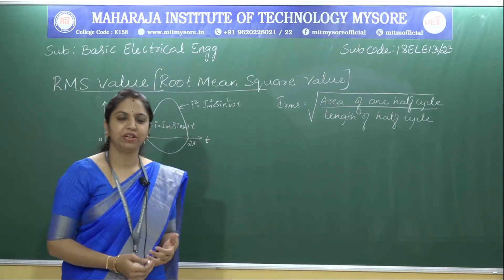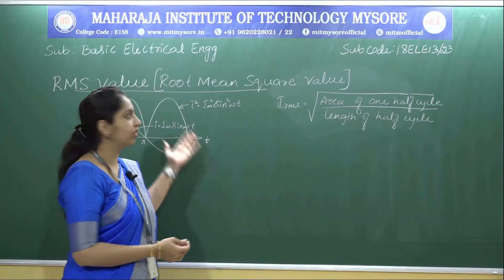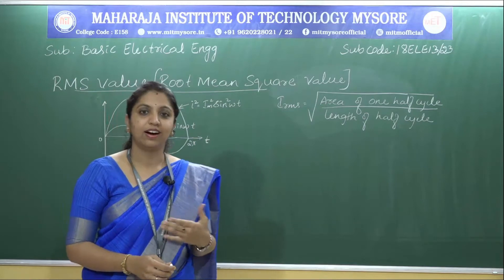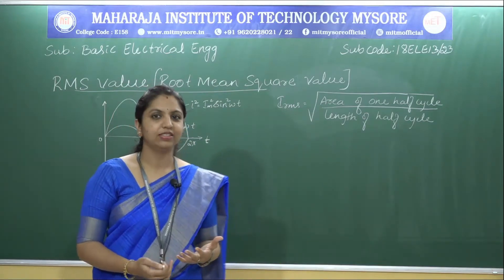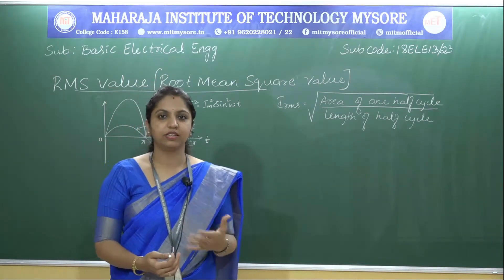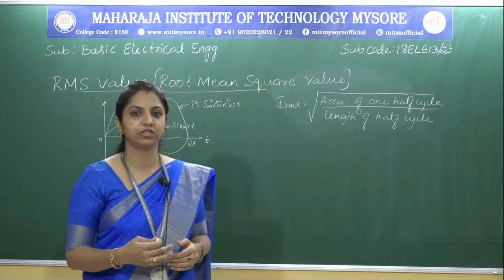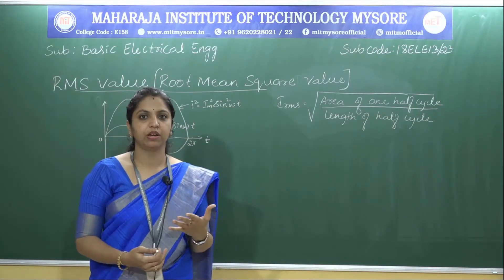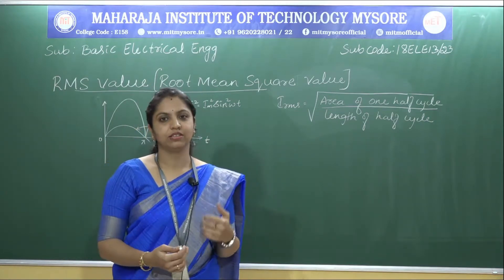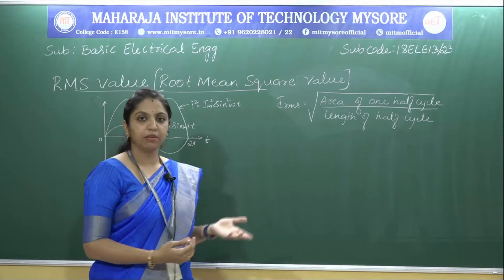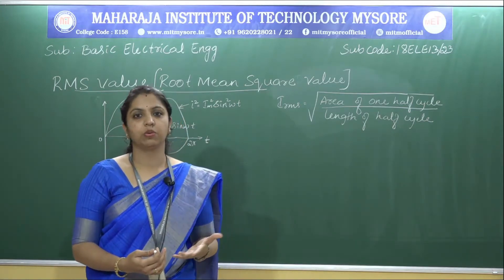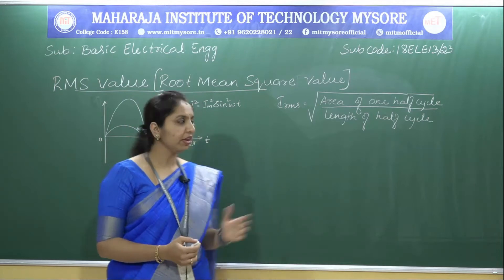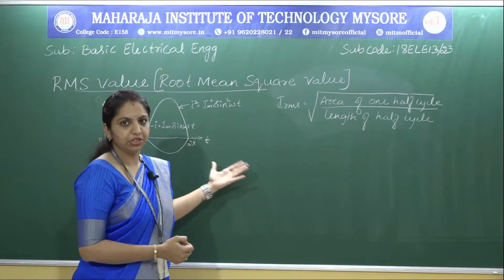I will be deriving the expression for RMS value, also called root mean square value. RMS stands for root mean square value, and RMS value is also known as effective value, as it gives the heating effect when alternating current passes through a conductor. Remember, RMS value is an effective value. This RMS value is also a DC equivalent value of the alternating quantity.